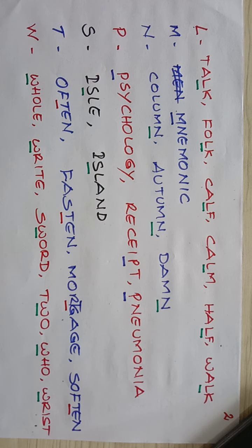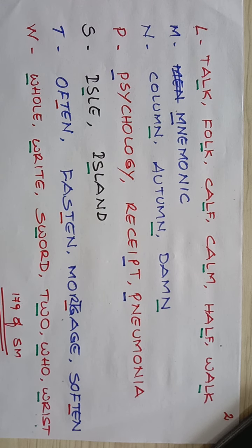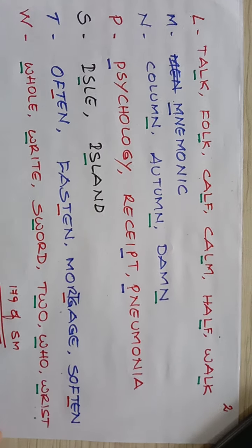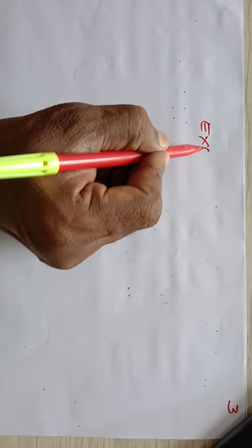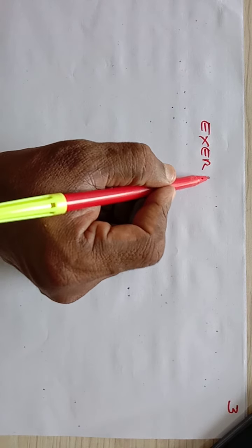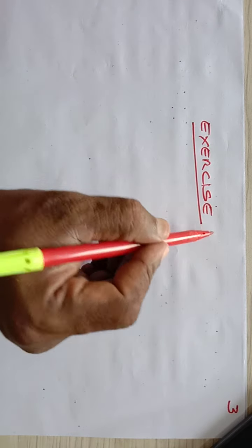If you have any clarifications, don't hesitate to ask us when you come to the classroom. Now let us do one exercise. I'll write words and explain. I'll pronounce the words — try to underline which letter is silent.